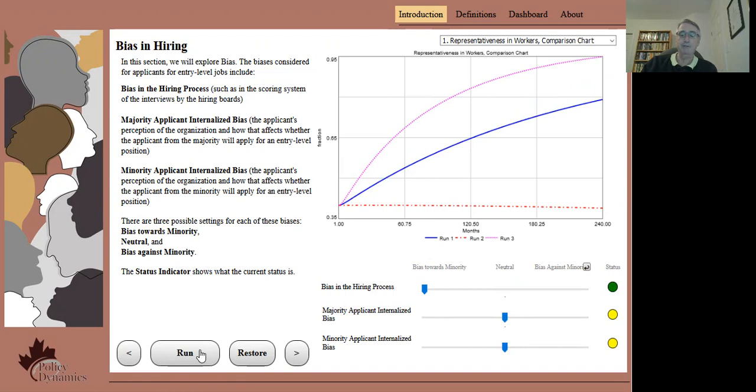Let's return the systemic bias to neutral and consider internalized bias towards the minority, encouraging them to apply for a job. This leads to gains in diversity compared to the no bias case, but not as much as the systemic bias towards the minority.